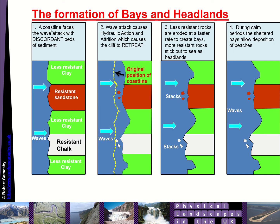If we get a coastline like this, where you might have less resistant clays shown in green, with resistant sandstone and resistant chalk, the waves would attack that coastline. That wave attack would cause things like hydraulic power and hydraulic action, where the waves pound into the cliffs and into cracks, forcing air in there and causing little explosions, as well as attrition and abrasion.